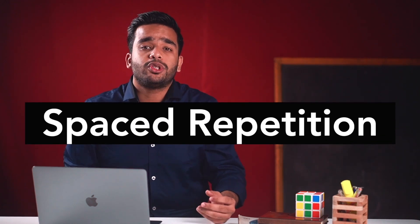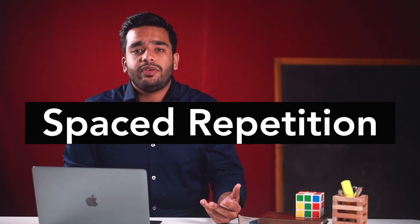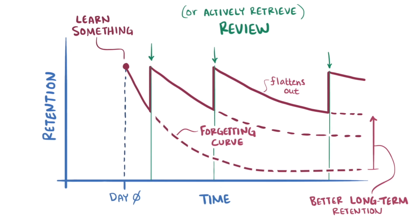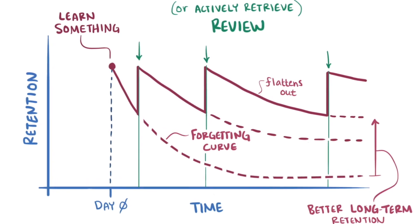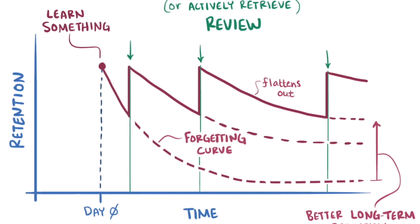But there is a way you can beat this forgetting curve and that is through spaced repetition. That is revising the topic again when your memory retention is at for example 50% to bump it back up to 100% again and doing it repeatedly. The more you do this, the more you will retain the memory of the topic and beat the forgetting curve.